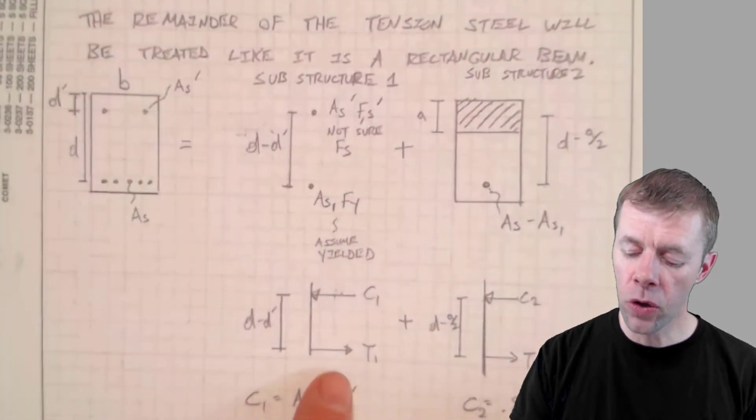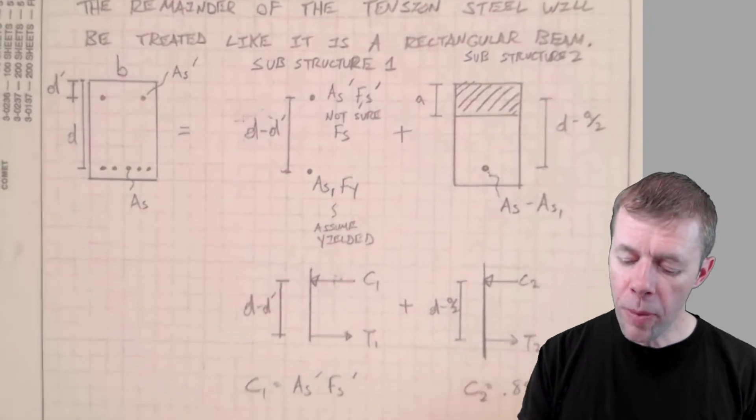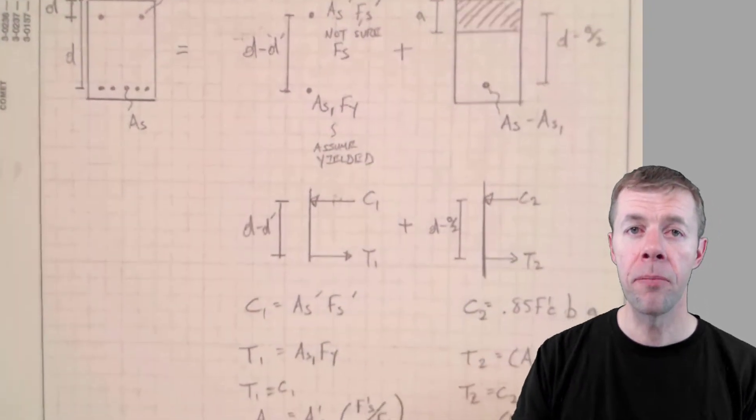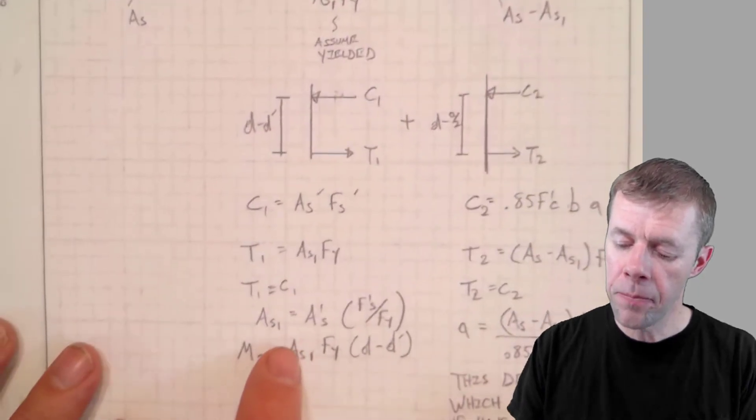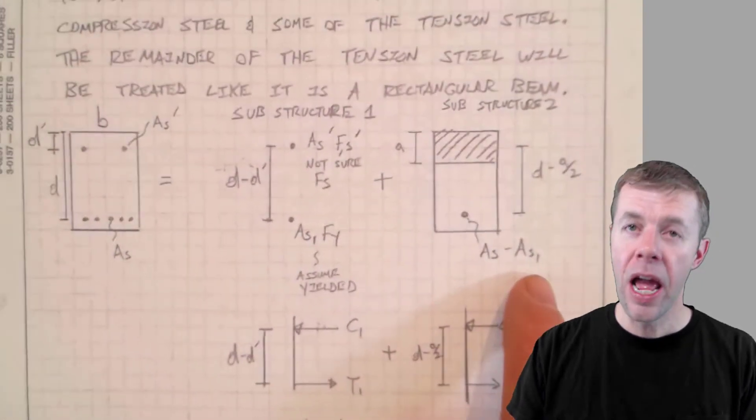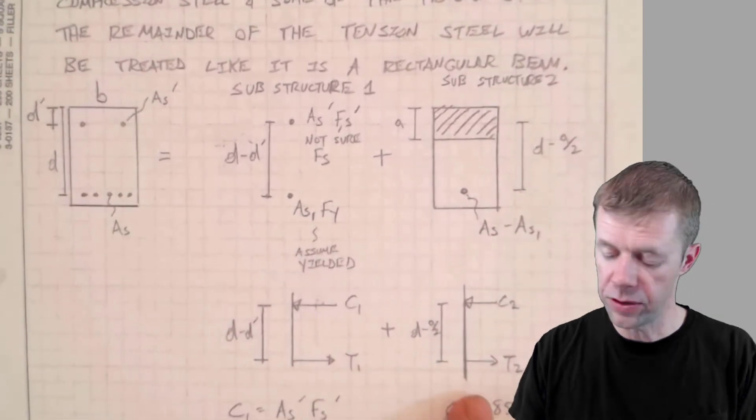We're going to find the resultants from that and then ultimately find the moments from that, the moment down here at the bottom. Once we know the amount of steel at the bottom, we can actually come back up here and solve for the moment capacity of this. We know how to do this. We've been doing this. This isn't hard.